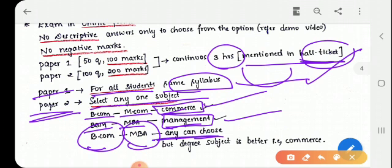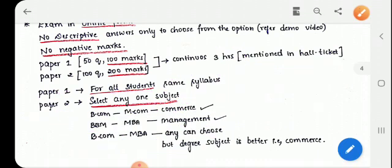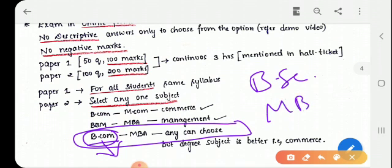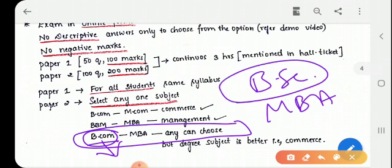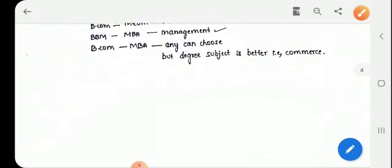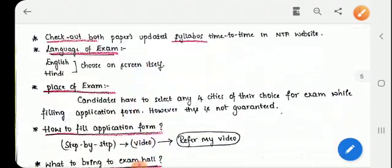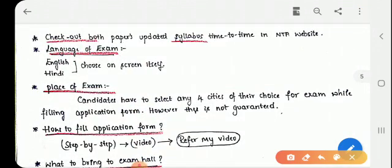Paper 1 is for all students, the same syllabus will be there but Paper 2, you have to select one subject. How to select the subject? If you have done B.Com and M.Com, definitely you should select commerce. If you have done BBM and MBA you should select management. Here is a confusion, if you have done B.Com and MBA which subject you have to choose? Here students will get the confusion whether to choose commerce or management. What your degree subject is, you should focus on that degree subject. That means in this case you have to choose commerce because you have done the bachelor's degree in commerce not management. Likewise, if you have done B.Sc and done MBA, for becoming a lecturer you should choose science, any subject like biology, whatever the subjects you have done in your B.Sc you should choose that subject.